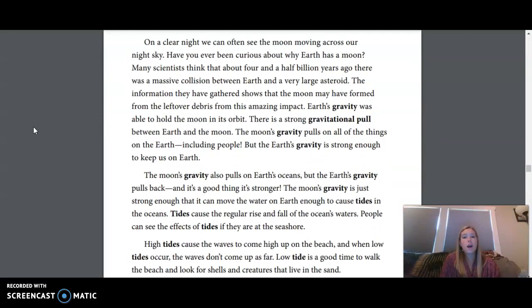On a clear night, we can often see the Moon moving across our night sky. Have you ever been curious about why Earth has a Moon? Many scientists think that about four and a half billion years ago, there was a massive collision between Earth and a very large asteroid. The information they have gathered shows that the Moon may have formed from the leftover debris from this amazing impact. Earth's gravity was able to hold the Moon in its orbit.